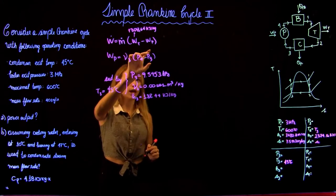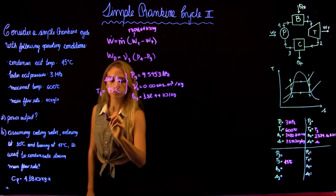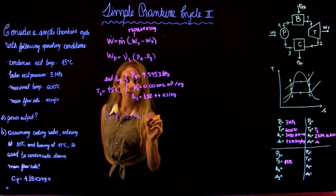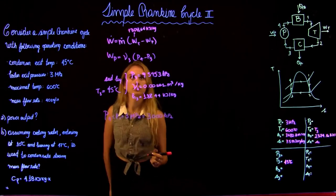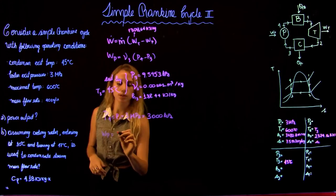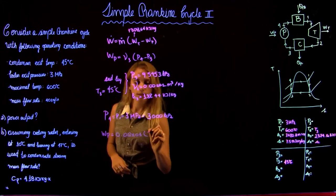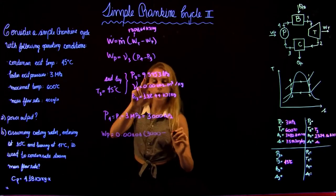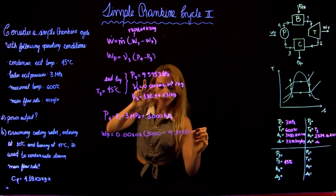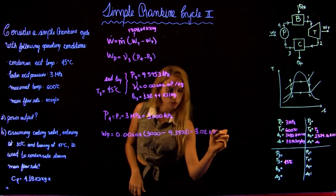We have the specific volume and P3. At state 4, P4 equals P1, which is 3 MPa or 3000 kPa. So the work of the pump is: 0.00101 × (3000 − 9.5953), which gives a pump work of 3.02 kJ/kg.